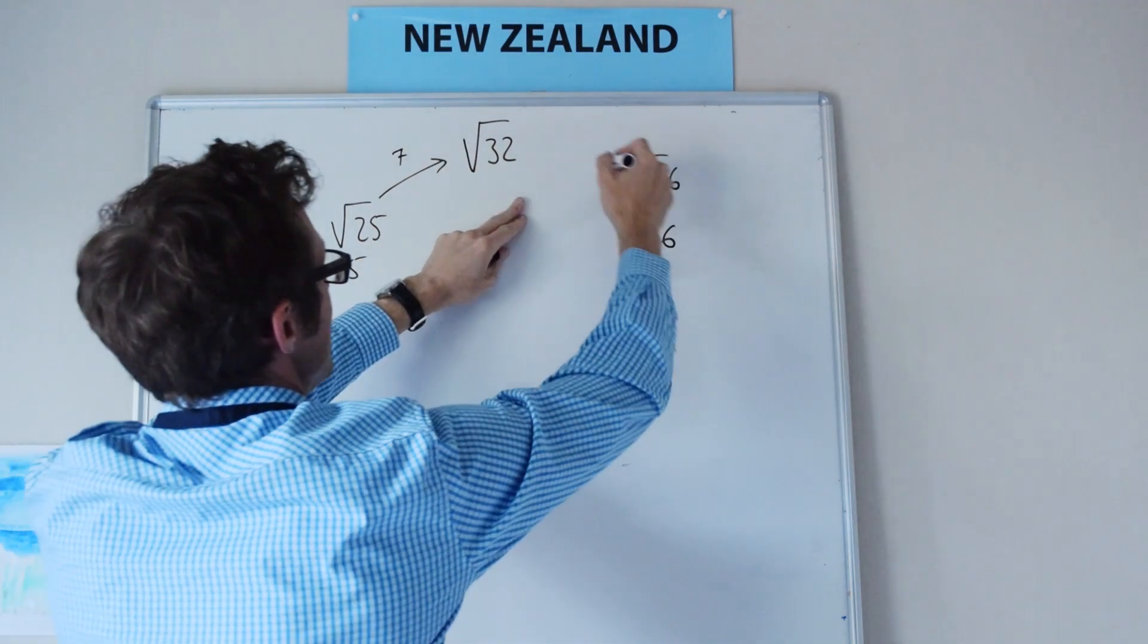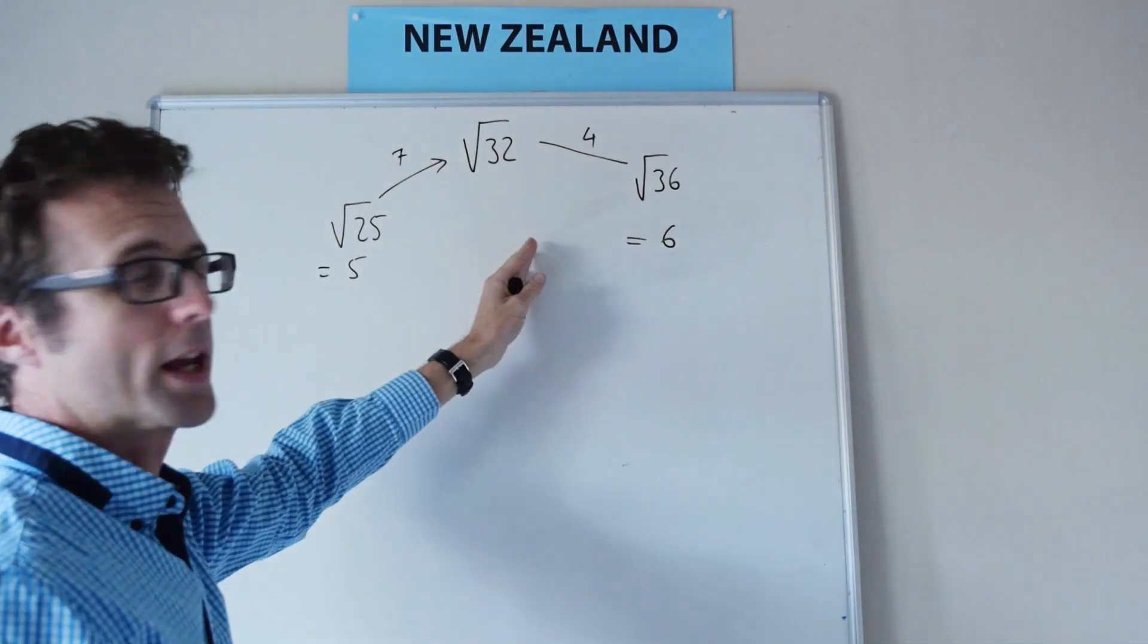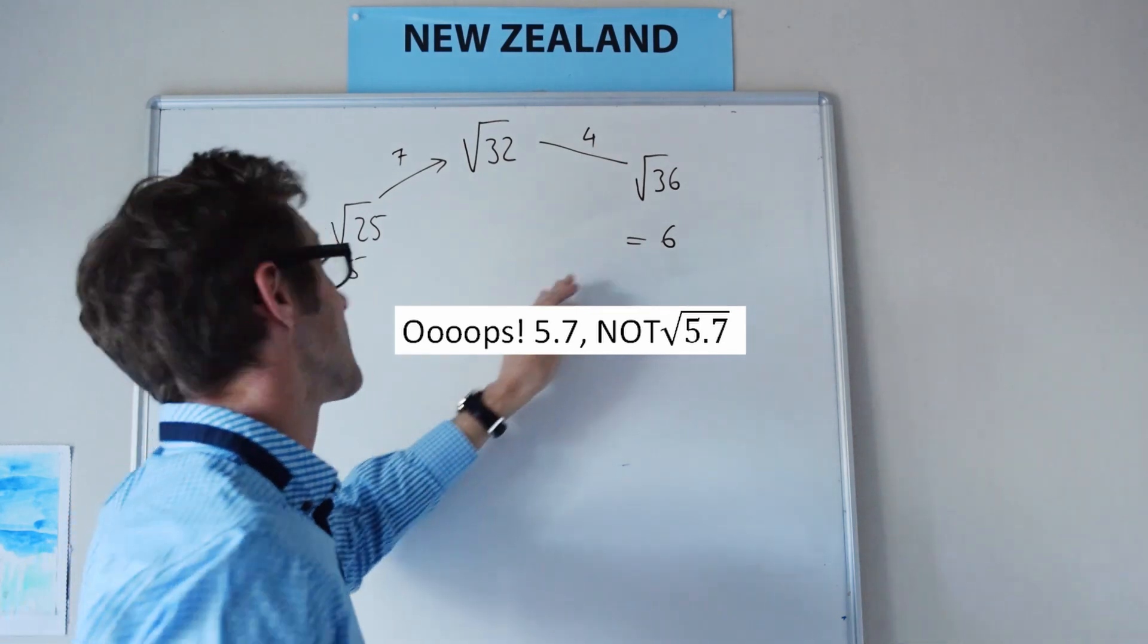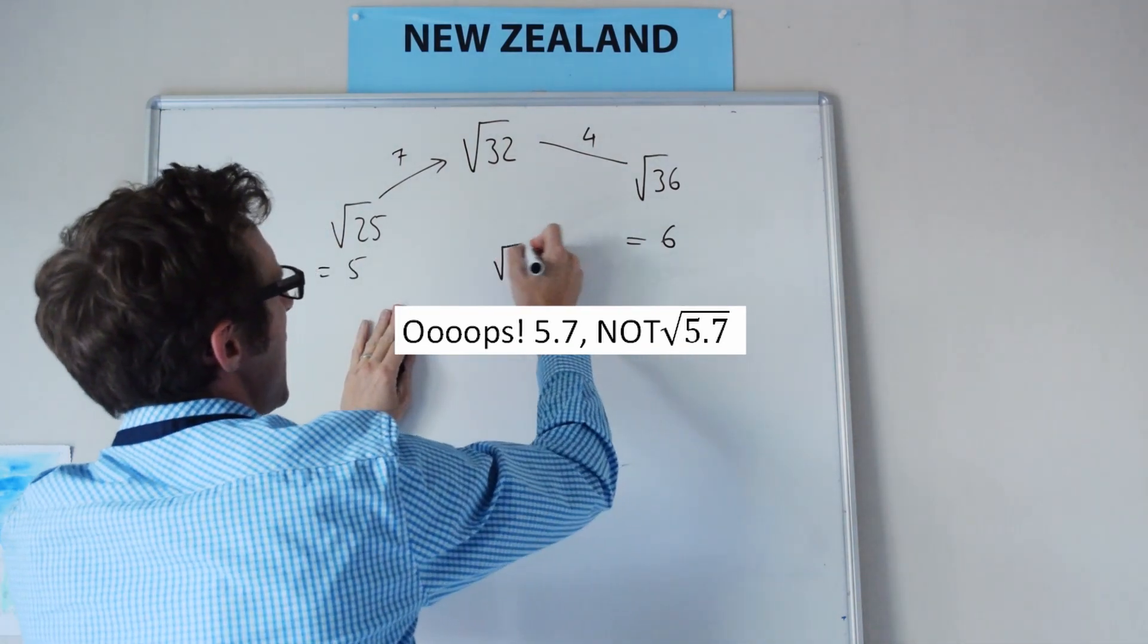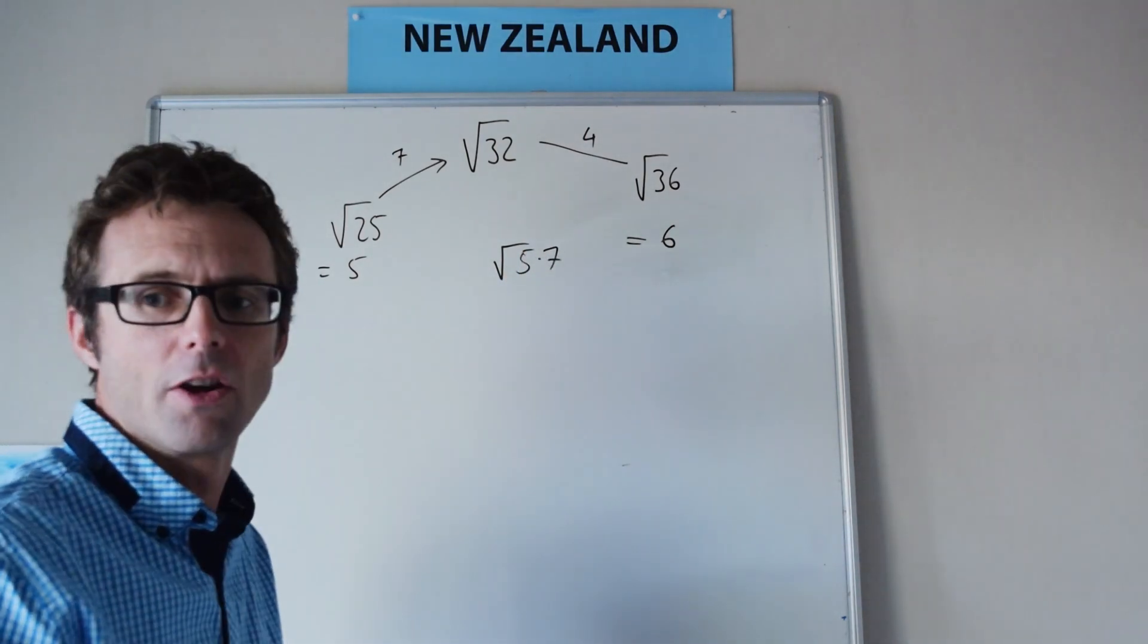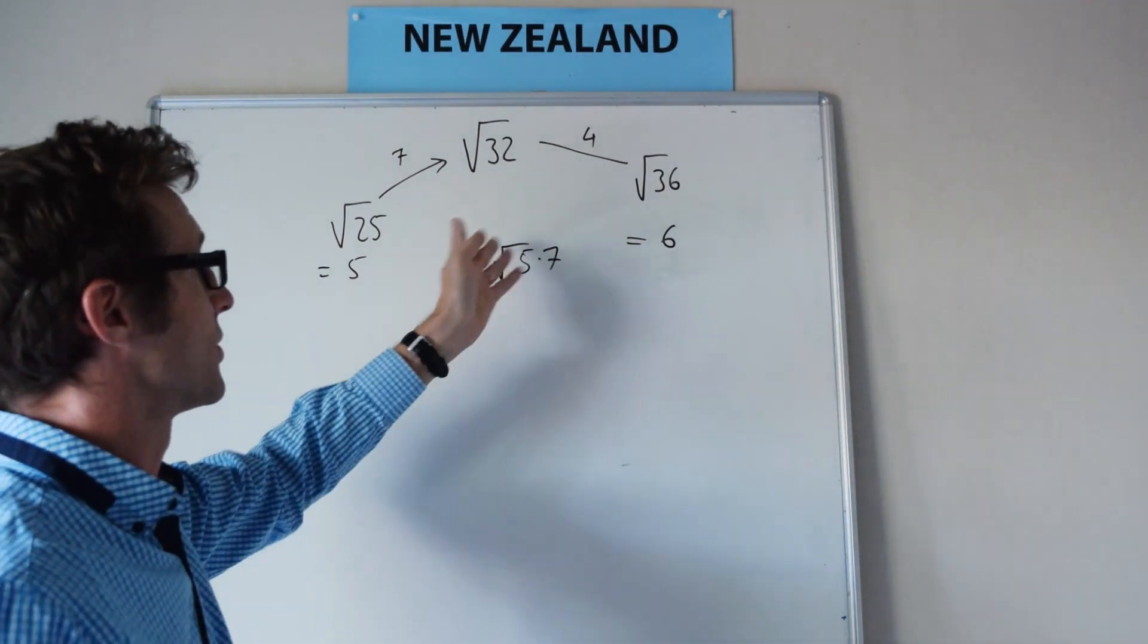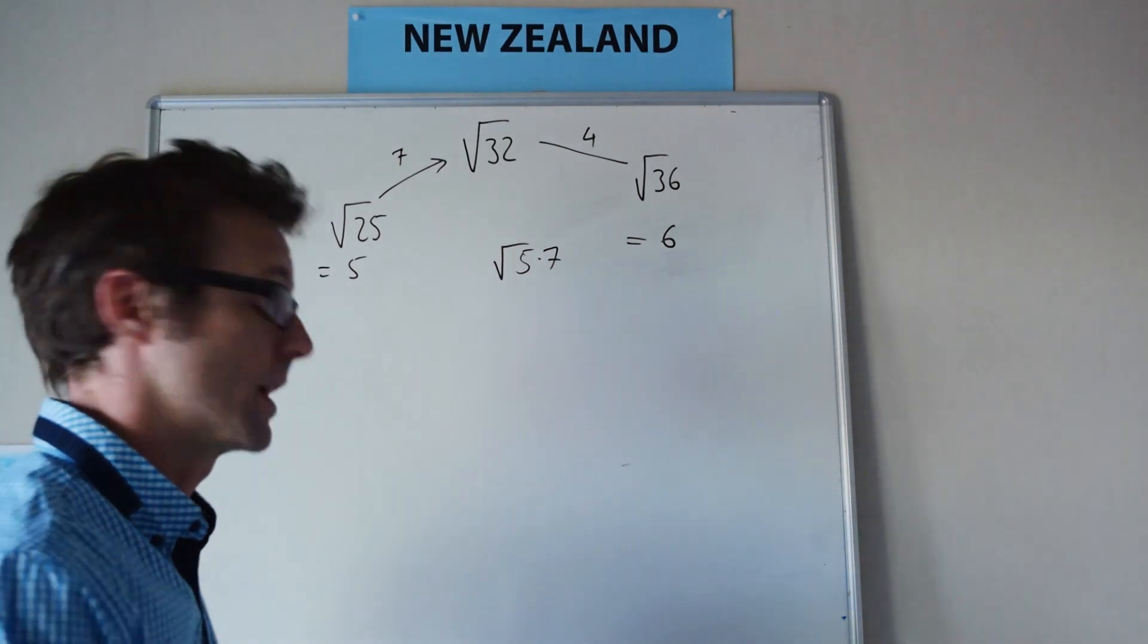So you should be able to work out that this is going to be closer to square root 36 than it is to square root 5, so we could make an estimate and say, well, it's roughly, say, 5.7. And you can check that on your calculator. Really, at our stage, we just need to make sure that we're, for something like this, above 5.5 and below 6.0, and we'll be okay.